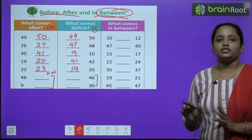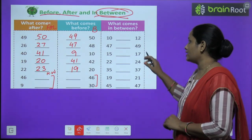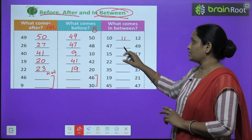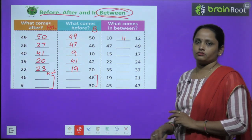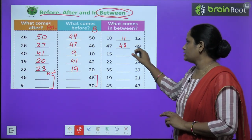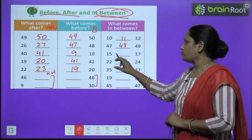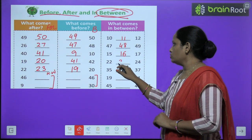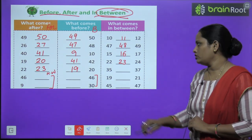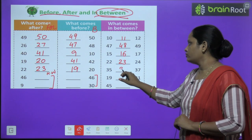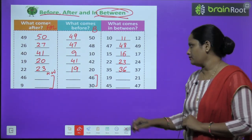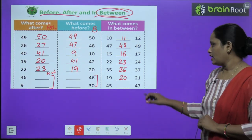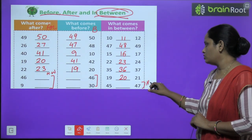Next is what comes between? Kya beech mein aata hai? Toh 10 aur 12 ke beech mein aata hai eleven. Kyun? Kaise? 10, 11, 12. 47, 48, 49. 15, 16, 17. 22, 23, 24. 35, 36, 37. 19, 20, 21. And this is your homework.